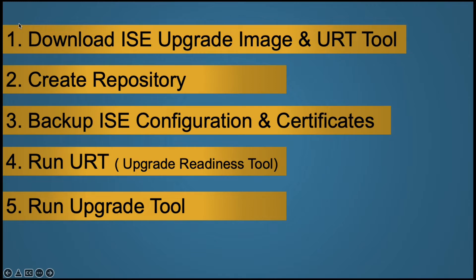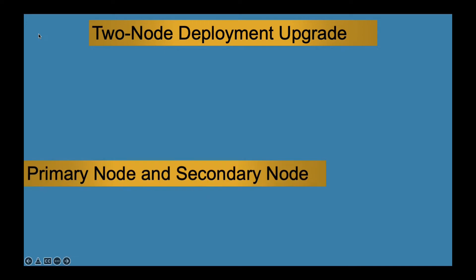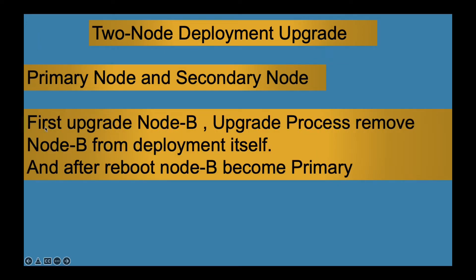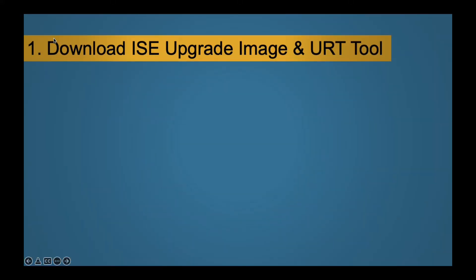If you are going to upgrade a two-node deployment with primary and secondary, you first have to upgrade Node B. The upgrade process will remove Node B from the deployment, and after reboot Node B becomes primary and Node A becomes secondary. You can then upgrade Node A, and after upgrade Node A will become primary and register itself to the deployment.